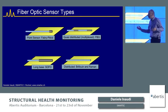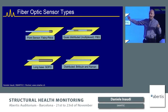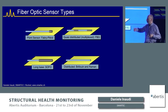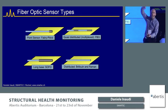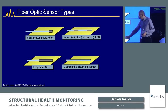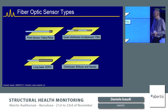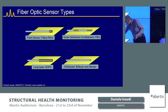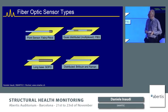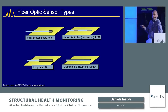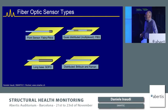Then we have long-base sensors such as the SOFO technology, where the fiber itself becomes a sensor — measuring elongation by how the fiber gets longer or shorter, allowing monitoring of a column from top to bottom. Finally, distributed sensors based on Brillouin and Raman scattering can measure every meter along the fiber for strain and temperature — very useful to detect cracks, leaks, and localize events. I'll focus on application examples rather than detailed physics.